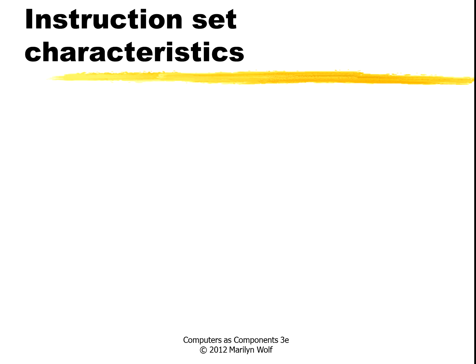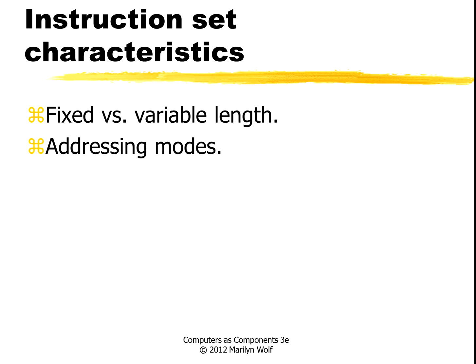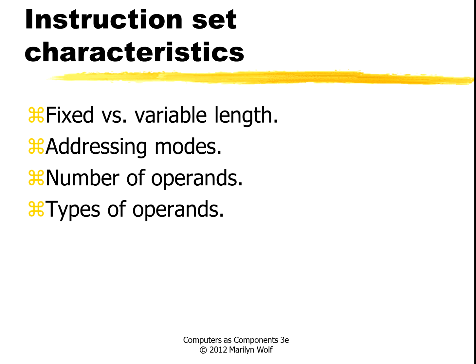Let's look at the characteristics of instruction sets. How long is an instruction? In some machines, all instructions are the same length; in others, like the Intel architecture, the length can vary quite a bit. Addressing modes — how we calculate an address — having several different modes can help us write compact, efficient code. The number of operands an instruction can operate on at once is very important, as are the types of operands: character, bit, different types of integers, different types of floating point, and other types.